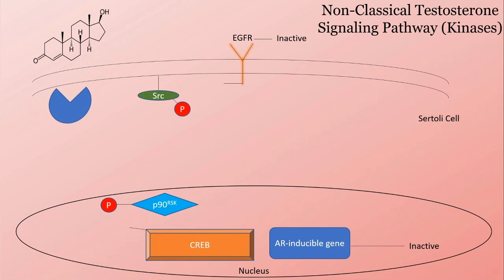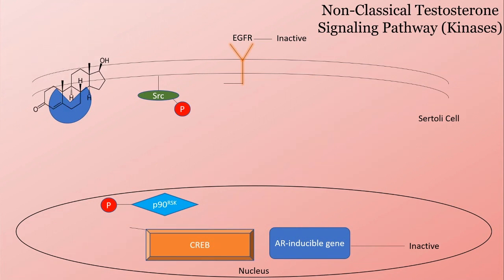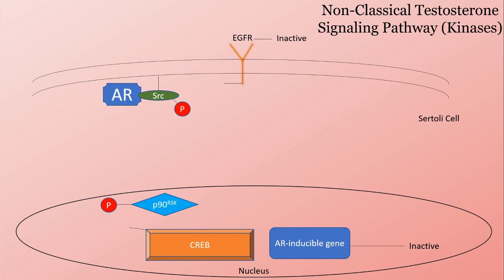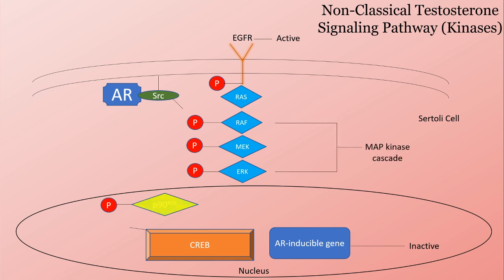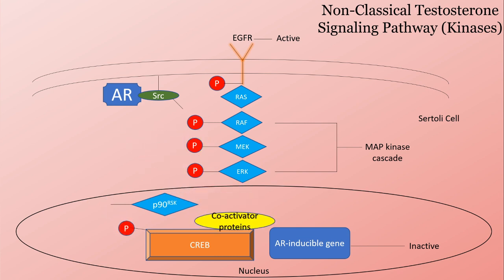The second pathway involves kinases and is known as the non-classical testosterone signaling pathway. It is similar to the classical pathway. However, instead of targeting ARE, the AR will bind to proto-oncogene tyrosine protein kinase, SRC. The activation of the SRC will cause it to phosphorylate the epidermal growth factor receptor, EGFR. This will stimulate the EGFR and force it to undergo the MAP kinase cascade, which will trigger the P90-RSK kinase located in the nucleus to phosphorylate the CREB, which is a transcription factor. The activation of the CREB will recruit co-activated proteins and will in turn activate the AR-inducible gene.